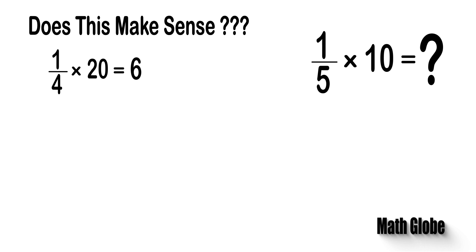Normally, when we multiply one-fourth by 20, the expected result would be 5. But as seen, the result of this multiplication is 6.